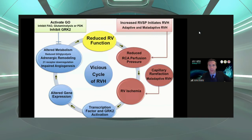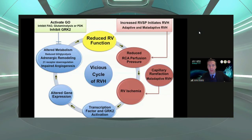There are various reasons the right heart suffers so much. Decreased RV function reduces right coronary artery perfusion pressure — coronary blood flow is both systolic and diastolic on the right side of the heart. In pulmonary arterial hypertension, RV systolic pressure is so high you lose 50% of coronary blood flow, causing functional ischemia. This leads to transcription factor activation, GRK2 activation, altered gene expression, changed RV metabolism with decreased glucose oxidation, adrenergic remodeling, beta receptor downregulation, and impaired angiogenesis — feeding a vicious cycle of further RV dysfunction.